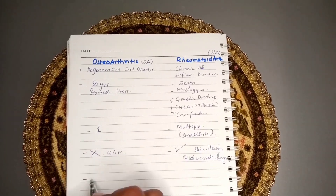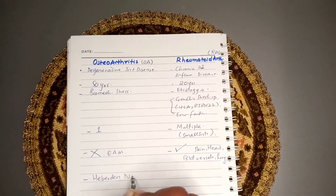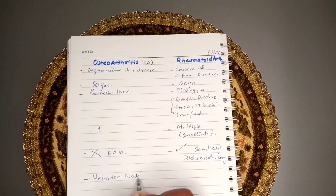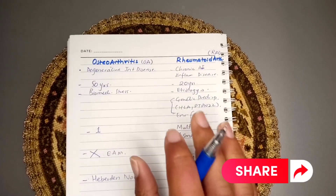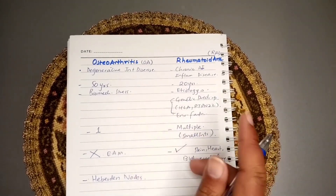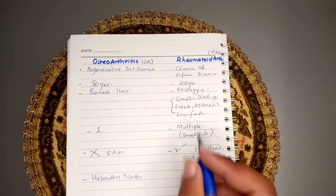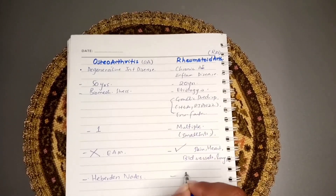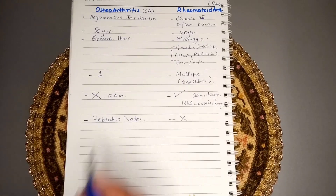In osteoarthritis we can see Heberden's nodes, which are basically osteophytes present at the distal interphalangeal joints. In rheumatoid arthritis, there are no such nodes or osteophytes.